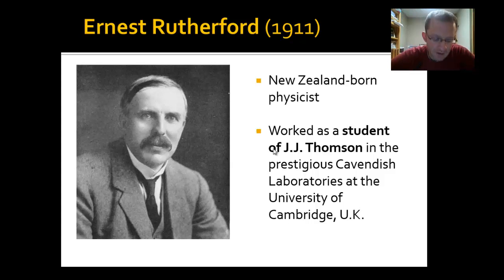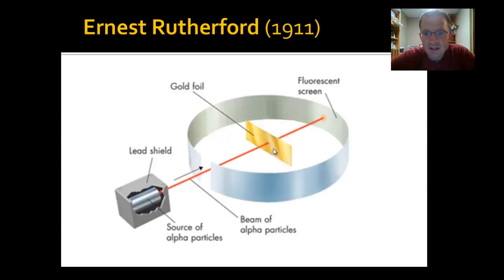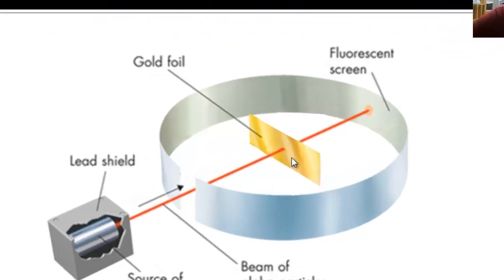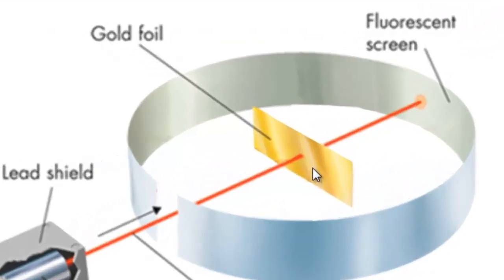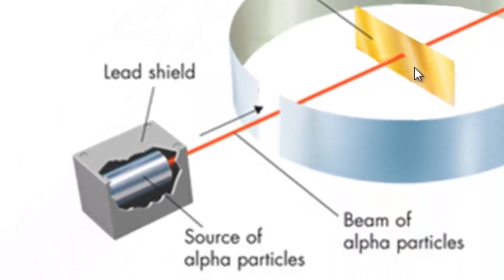Now Rutherford's famous for something called the Gold Foil Experiment. The Gold Foil Experiment consists of, as you can see in the middle here, a piece of gold foil. It's got a ring around it labeled as a fluorescent screen. Then off the bottom left there's a box labeled with a lead shield.